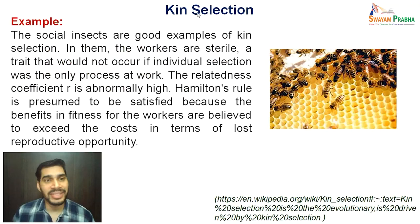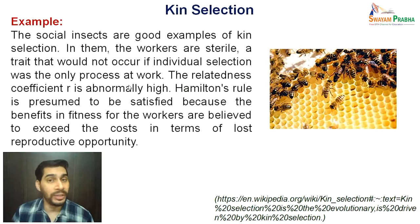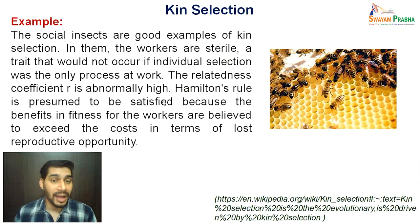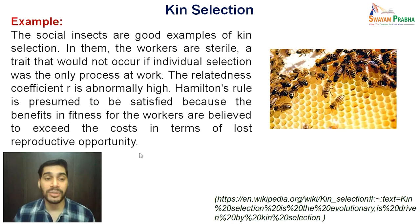The example of kin selection is the social insects. In them, the workers are sterile — a trait that would not occur if individual selection was the only process at work. Because if natural selection were to operate alone, these sterile individuals will never succeed; they are not going to have reproductive success and thus will not be favored by natural selection. The relatedness coefficient R is abnormally high. Hamilton's rule is presumed to be satisfied because the benefits in fitness for the workers are believed to exceed the cost in terms of lost reproductive opportunity.